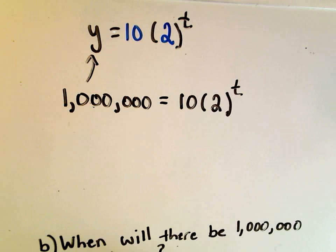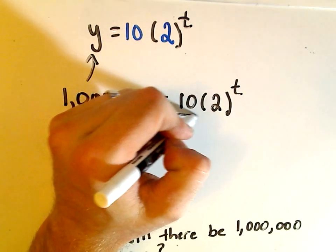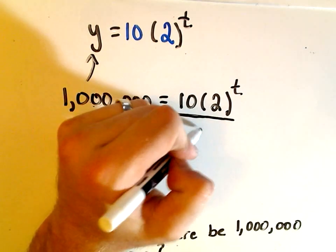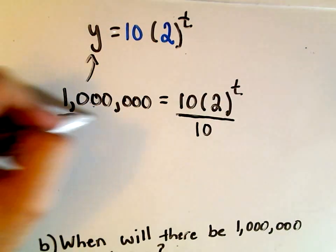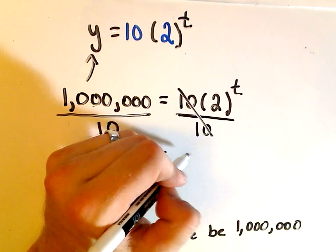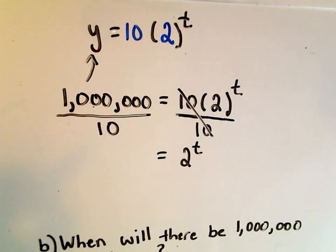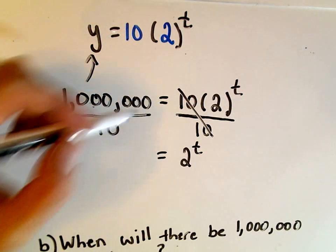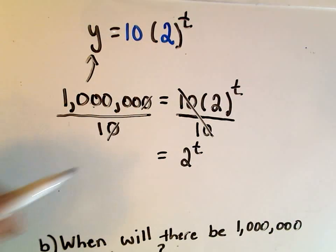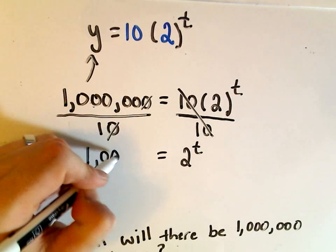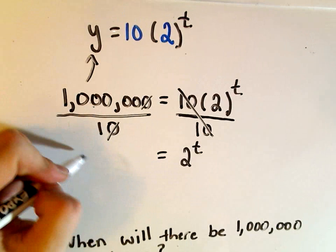And we have to now solve this for t. The first thing I would do here is whatever the coefficient is on my sort of my base part. Basically I'm saying the 10, I get rid of the a value. So on the right the tens will just cancel out, we've got two to the t left over. You can write it with parentheses or without, it means the exact same thing. So all we need to do is really just cancel out a zero. So instead of one million I'm going to be left with one hundred thousand.